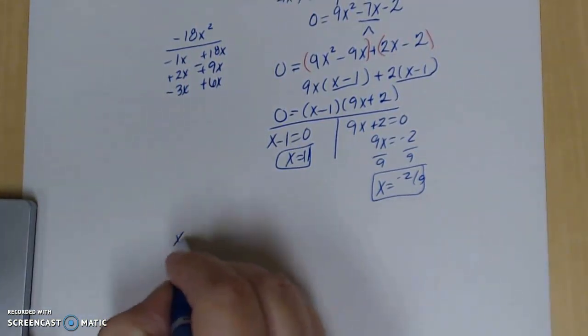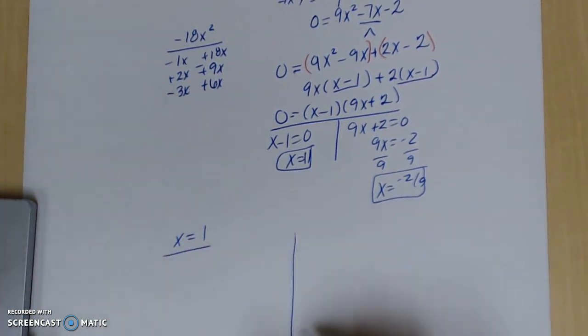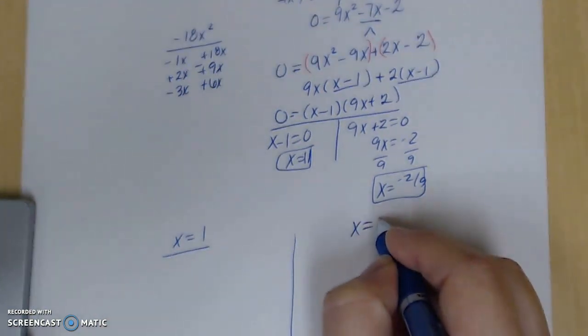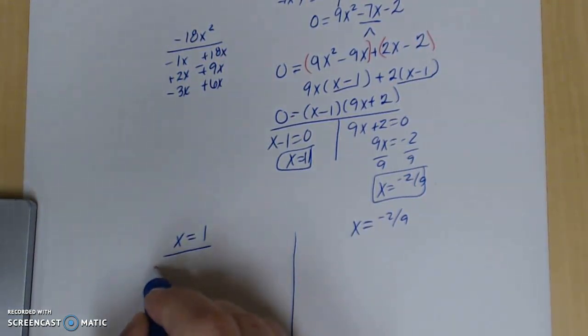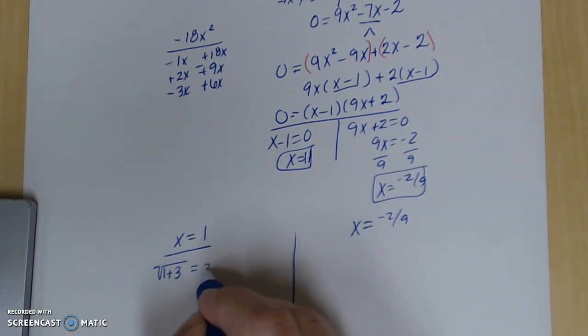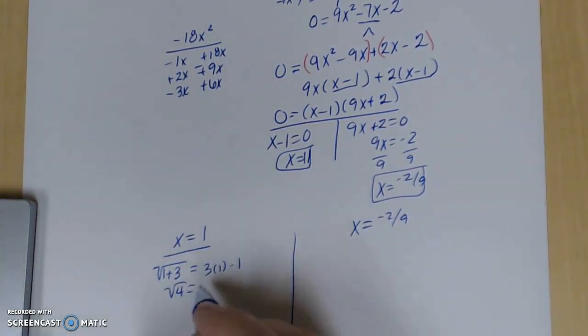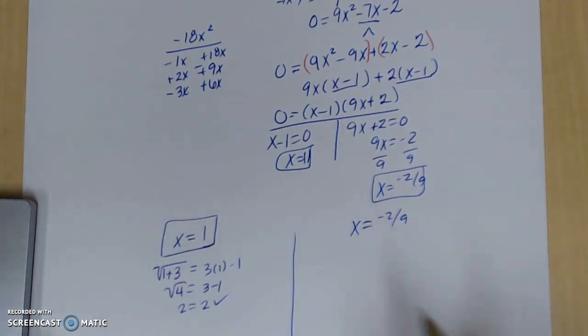So I'm going to come over here to the side and say, let's check x equal to 1. And let's check x equal to -2/9. So when you come in here and you check your answer, I'm going to go all the way back up to the original. So I'm going to say the √(1 + 3) is equal to 3(1) - 1. So I get √4 is equal to 3 - 1. So 2 is equal to 2. That is true. So this is definitely an answer.